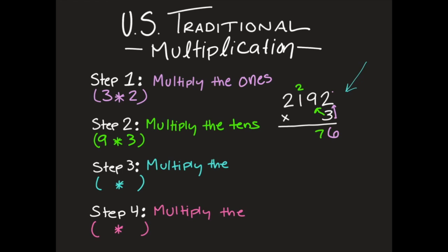Step three, I need to multiply the hundreds. So I'm going to take my three and I'm going to multiply it three times one, put that down here. That's going to equal three, but don't forget I need to add the two from my problem before. So three times one is three plus two is five.